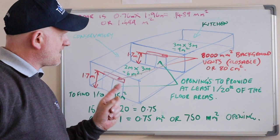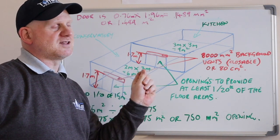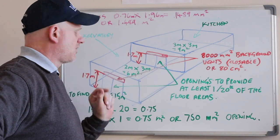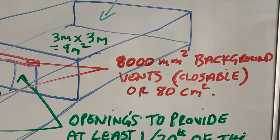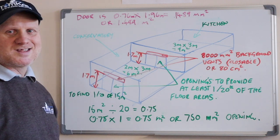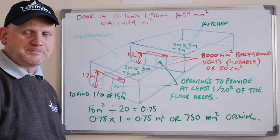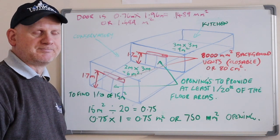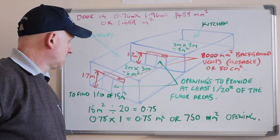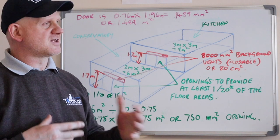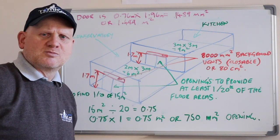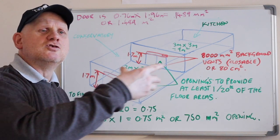We also need to provide background ventilation of 8,000 millimetres squared — that's 80 centimetres squared — going from the kitchen through to outside. That vent needs to be closeable and positioned more than 1.7 metres off the floor. Importantly, normal gas vents for a gas appliance cannot have fly screens and cannot be closeable, whereas this building regulations vent must be closeable because it's ventilating the room, not the gas appliance.